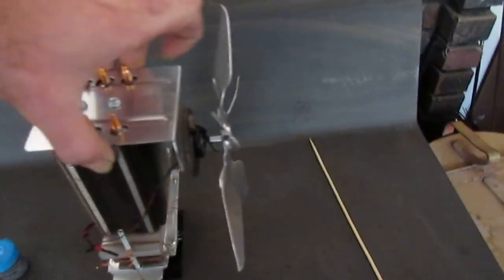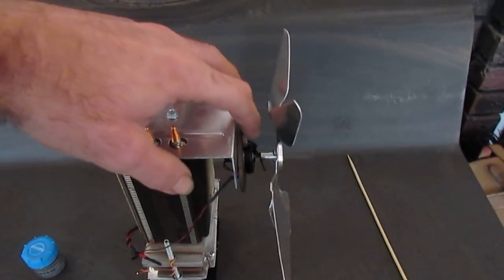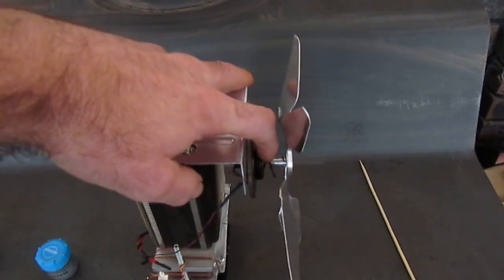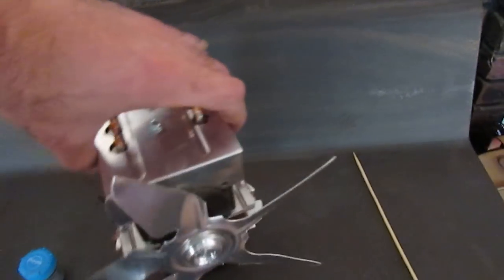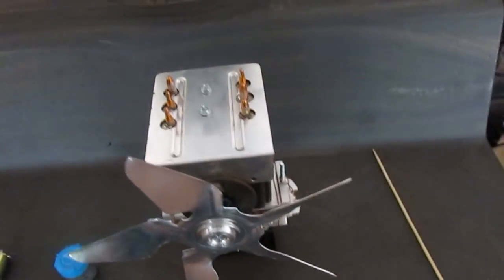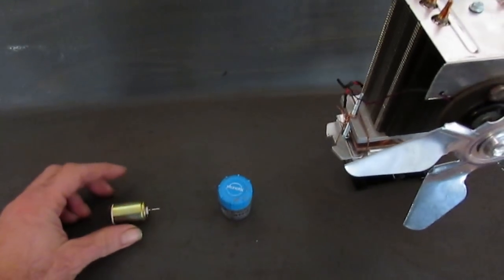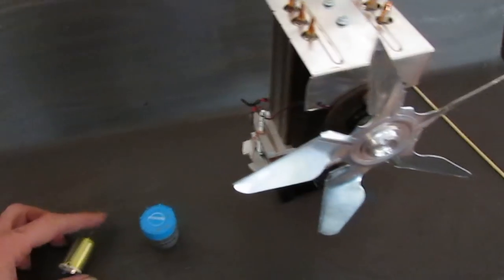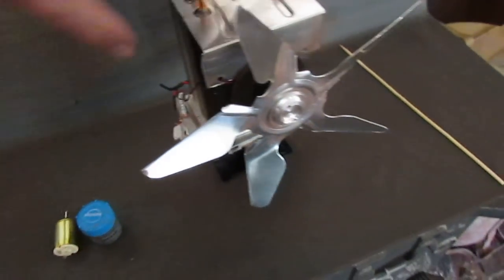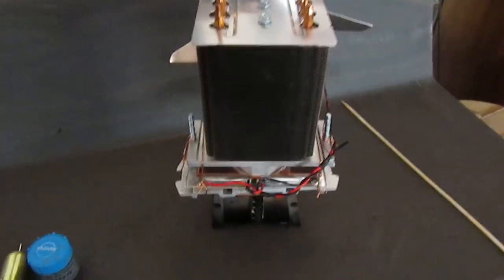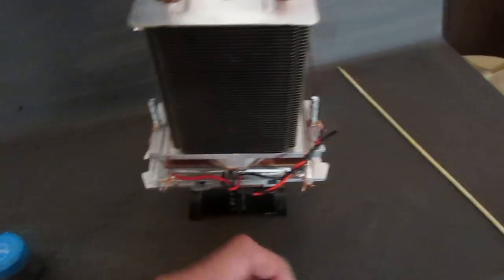And then this is a 1.3 to 6 volt solar motor. They're really cheap on eBay as well. Although I think this is just a mock up. I think I'm going to end up using this Nidec motor because I've tried it with this setup and it seems to work pretty good. So like I said, these are just two TECs wired in series, just standard to the motor.